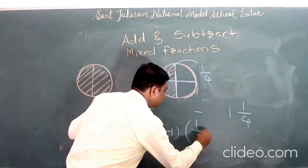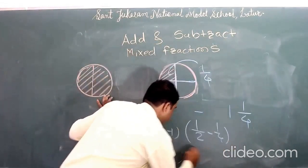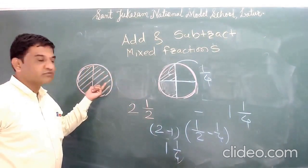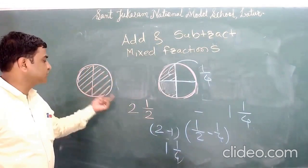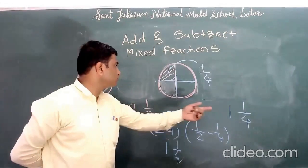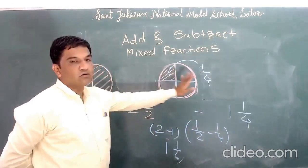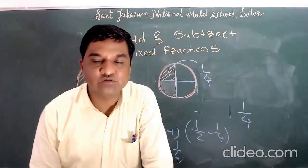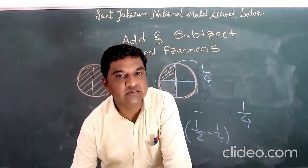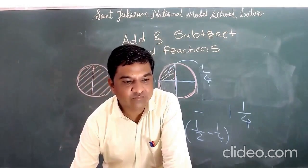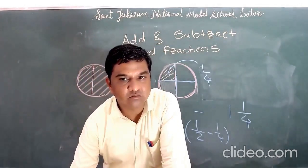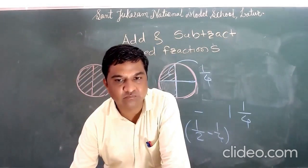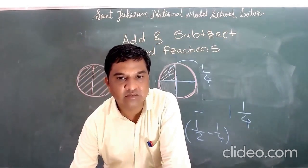So half minus one-fourth gives us one-fourth. In the results we got the answer for subtraction of two whole one-by-two minus one whole one-by-four as one whole one-by-four. This is the graphical method of subtracting mixed fractions. In the next video we will see some numerical problems and how to solve addition and subtraction of mixed fractions. Till then, goodbye.